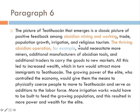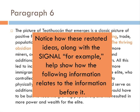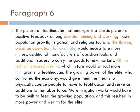We're going to look at paragraph six to demonstrate some examples of cohesion and how it helps show how the paragraph is actually organized. I've highlighted in orange how words are restated. For example, "obsidian mining and working" is restated as "the thriving obsidian operation" — the word obsidian is the same, but "operation" replaces "mining and working." I've highlighted the signal word "for example" to show that this idea is going to be pulled from the information listed above, and that the obsidian operation is now the focus of the next part of the paragraph. Notice "all this led to increased wealth" — "all this" is again referring to the thriving obsidian operation.